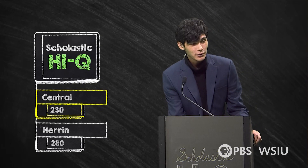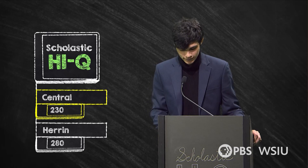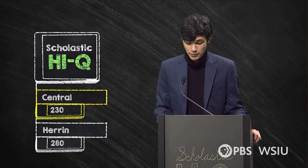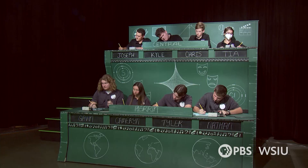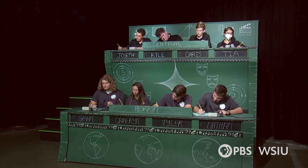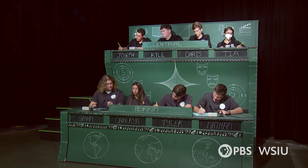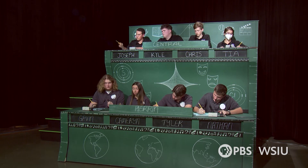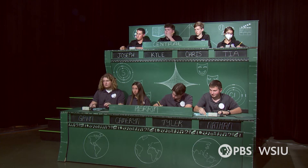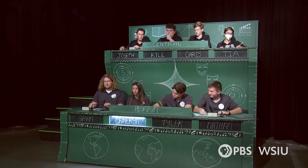Next question, pencil and paper ready: what is the probability of an event happening if the odds of the event occurring are five to two in favor? Answer: five out of seven — correct.